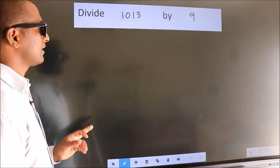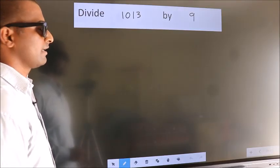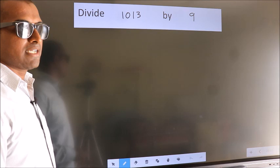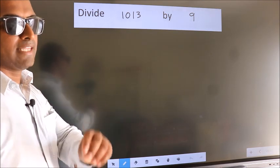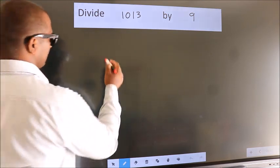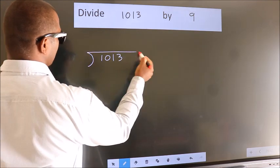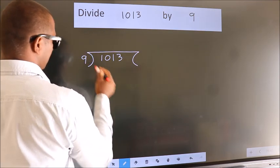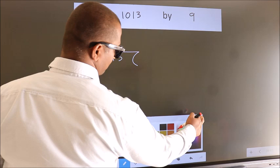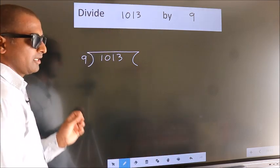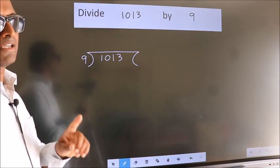Divide 1013 by 9. To do this division, we should frame it in this way: 1013 here, 9 here. This is your step 1. Next.